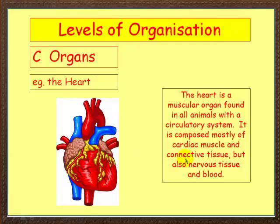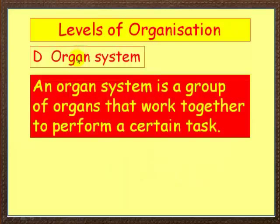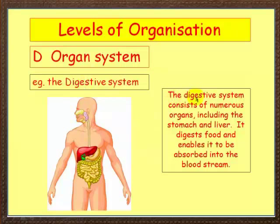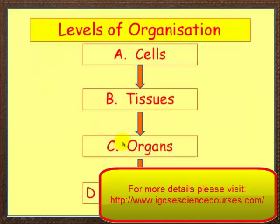The top level of organization is the organ system. An organ system is a group of organs that work together to perform a certain task. Here we've got the digestive system, which consists of numerous organs including the stomach and the liver. It digests food and enables it to be absorbed into the bloodstream in the small intestine. Finally, undigested food leaves via the large intestine and out through the anus.